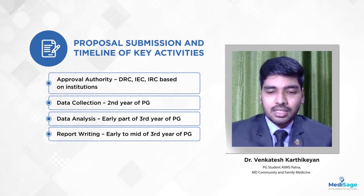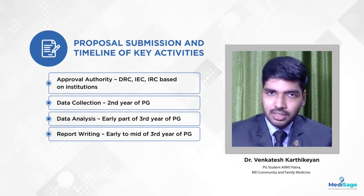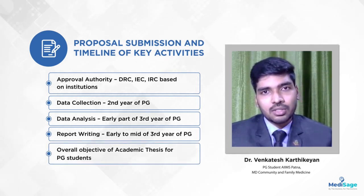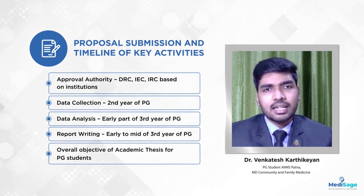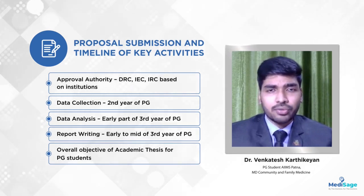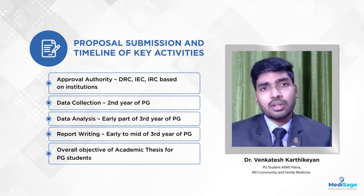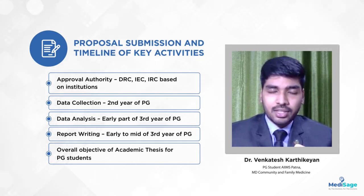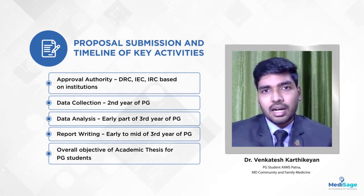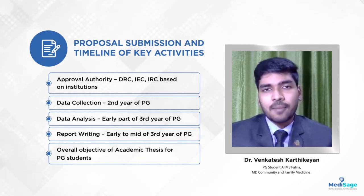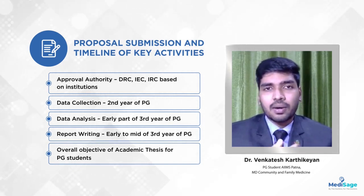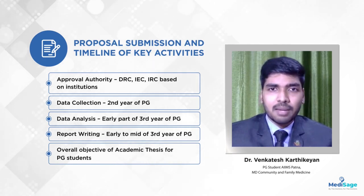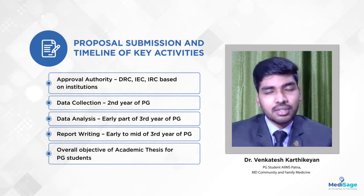The entire process — from preparing the proposal to submission to the IRC and IEC — usually takes place in the first six to seven months of PG, depending on the institute. Data collection usually happens in the second year. The first half of the third year is for data analysis and writing your thesis — generating results, writing the thesis, which should mostly be complete by the first half of third year.